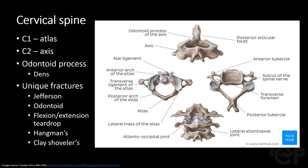Going over basic cervical spine anatomy, we have C1, also known as the atlas, shown here on the left. C2 is termed the axis. The joint in between C1 and C2 is aptly named the atlanto-axial joint. C2 has a prominent anterior structure termed the odontoid process, commonly named the dens. It protrudes superiorly and rests just posterior to the anterior arch of the atlas. Starting at C2, the cervical spine has a bifid spinous process protruding posteriorly, which is unique to the cervical spine.